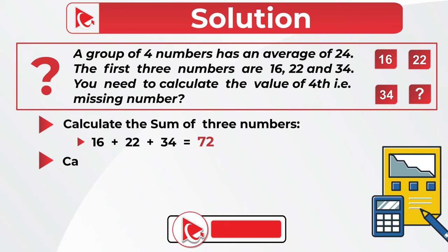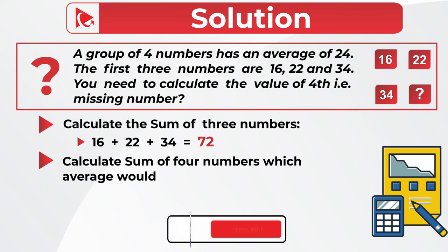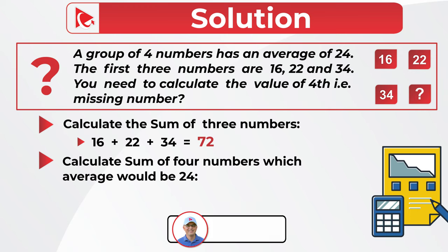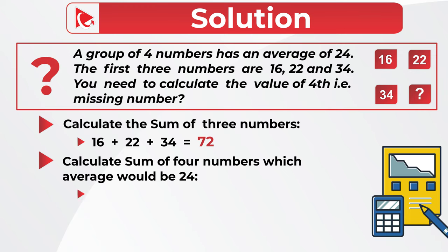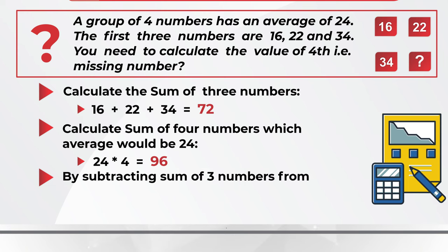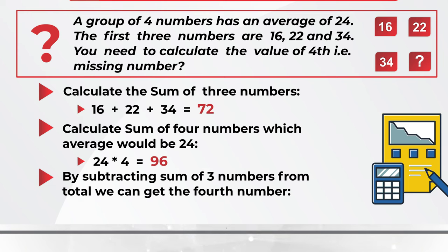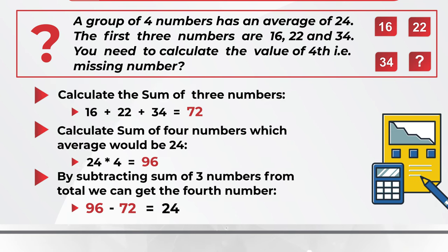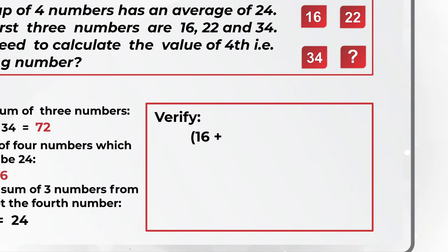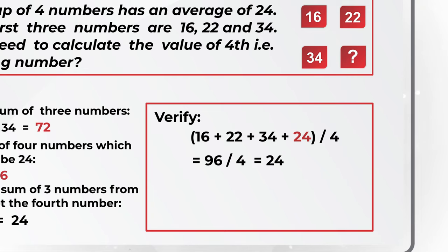In the next step, we need to determine what would be the sum of four numbers for which the average would be 24. To do this, we need to multiply 24 by 4, and the end result would be 96. And in the last step, we need to subtract the sum of three numbers from the total: 96 minus 72 equals 24. Let's verify this: 16 plus 24 plus 34 plus missing number 24, divided by 4, equals 96 divided by 4, equals 24.